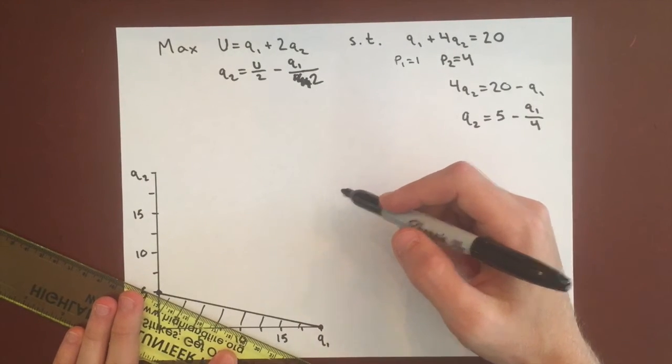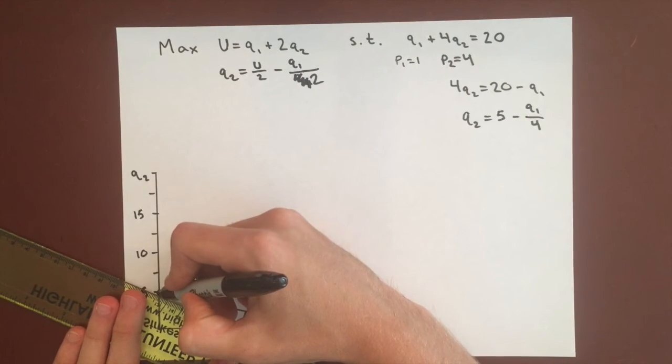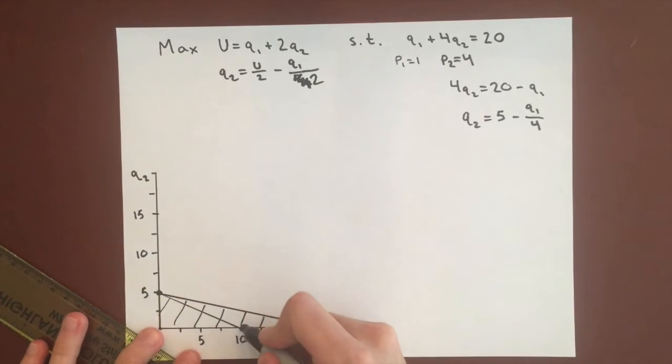As utility changes the indifference curves get farther and farther away from the origin, but the slope will stay the same.